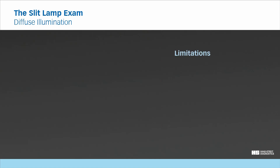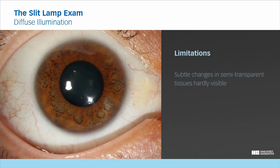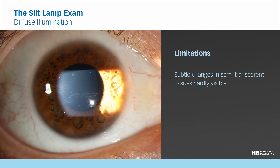Limitations. While diffuse illumination is useful for providing an overview, it is unsuitable for detecting subtle changes in semi-transparent tissues. For example, in this image you do not see any defect in the corneal epithelium. But when illuminating with focal illumination, it becomes immediately visible.